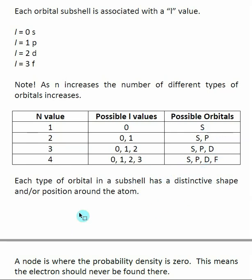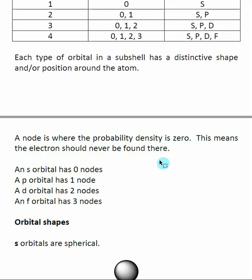Each orbital has a distinctive shape and position around the atom. These orbitals come from Schrödinger's equation and represent a probability of where electrons will be found — a probability shape showing where the electron is likely to live. Some orbitals have what's called a node, which is a region where the probability density is zero — a space inside the orbital where electrons technically cannot be found. Different orbitals have different numbers of nodes.